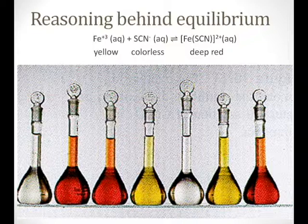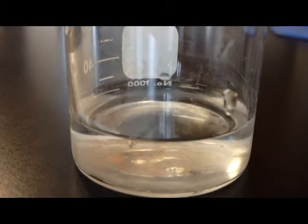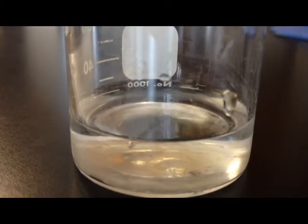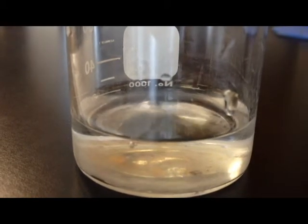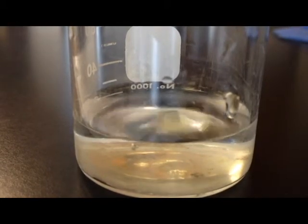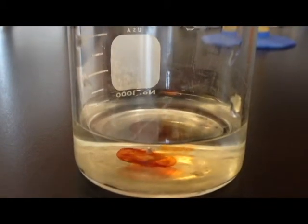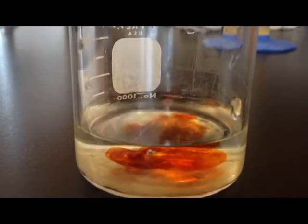In order to form the complex ion, we start with 20 milliliters of distilled water and add 20 drops of 0.1 molar iron nitrate along with 20 drops of 0.1 molar potassium thiocyanate. The iron and the thiocyanate react to form the complex iron thiocyanate ion, which is bright red-orange in color.